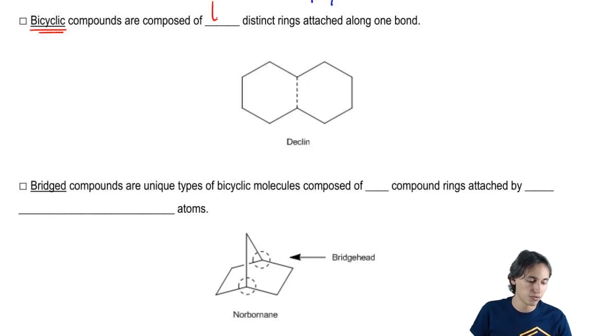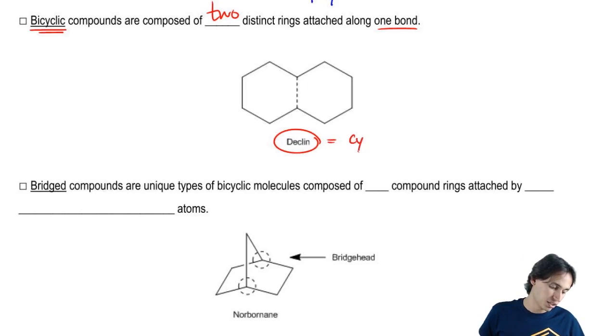Bicyclics are composed of two distinct rings attached along one bond. This would be an example of a bicyclic made out of two cyclohexanes, and the actual name for a bicyclic of two cyclohexanes is called a declan. Declan just equals cyclohexane bicyclic.